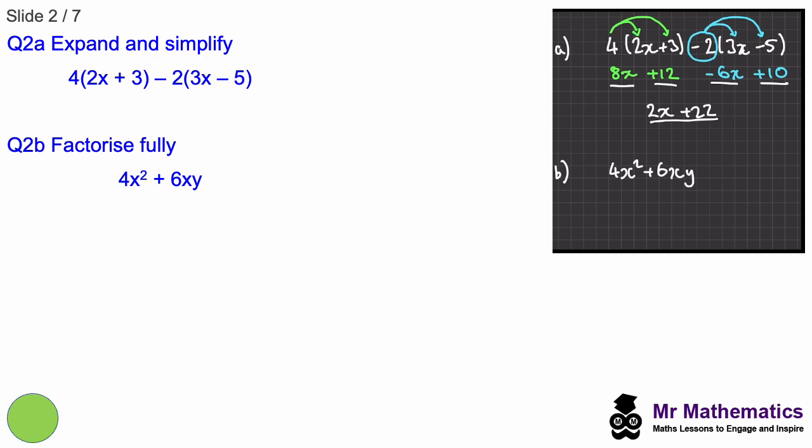For part b, we need to find the highest common factor of both terms. You can see that 2 goes into the 4 and the 6, and x goes into x squared and x here. So the highest common factor is 2x. We can write 4x squared as 2x multiplied by 2x, and 6xy is 2x times 3 times y. Because we already have the 2x, we can cross this out. What we need on the inside of our brackets is another 2x here, and a 3y.